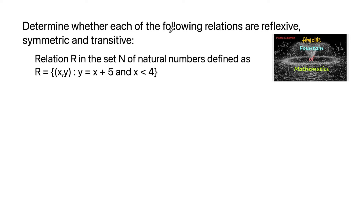Determine whether the following relation is reflexive, symmetric, and transitive. The relation is defined on the set of natural numbers as R = {(x, y) | y = x + 5 and x < 4}. We will find the possible ordered pairs.